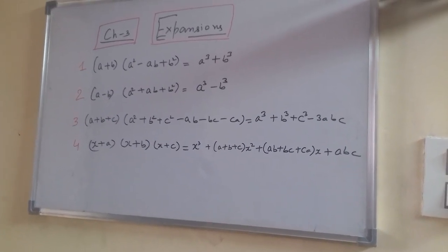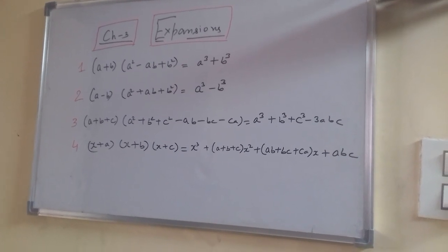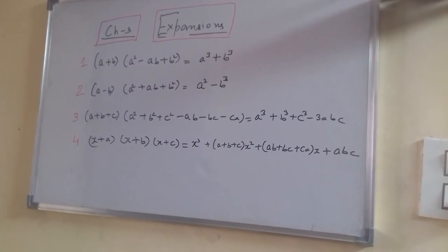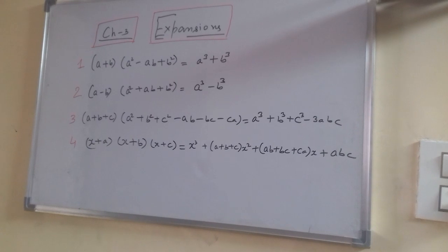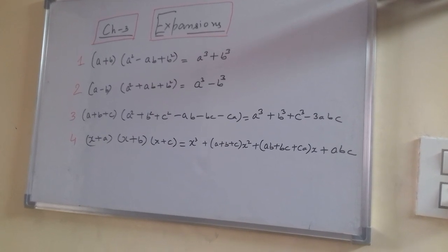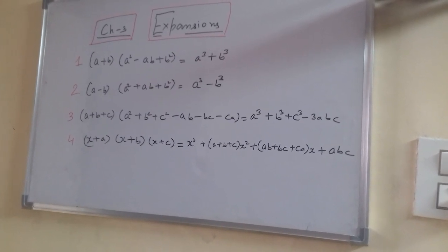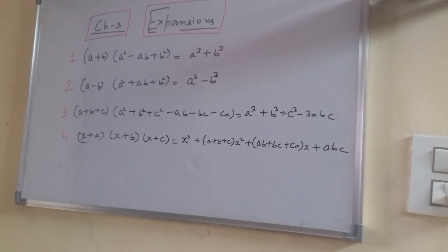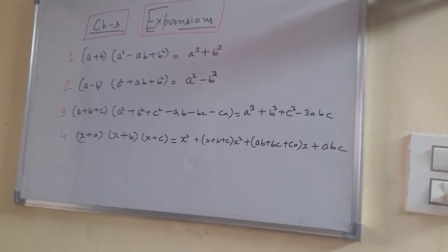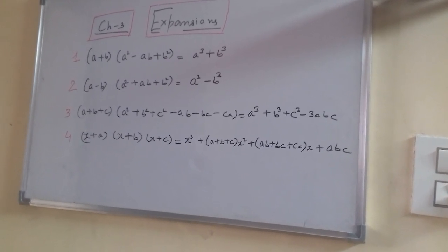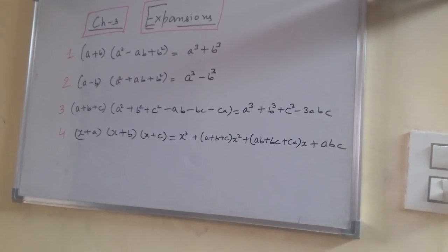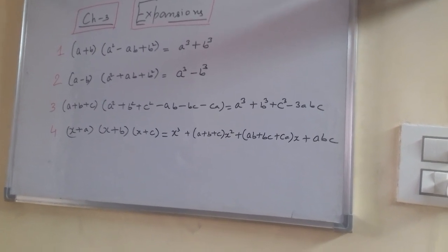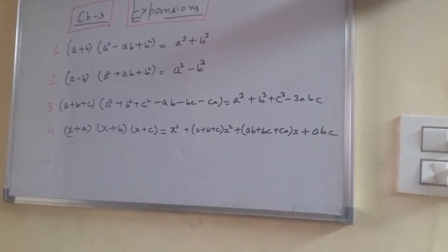The last formula is: (x + a)(x + b)(x + c) is equal to x³ + (a + b + c)x² + (ab + bc + ca)x + abc.